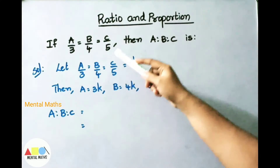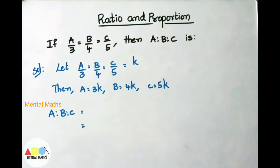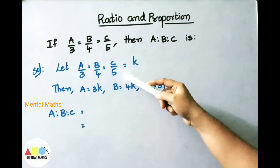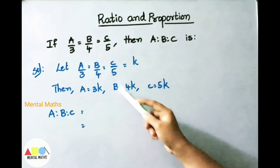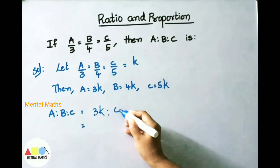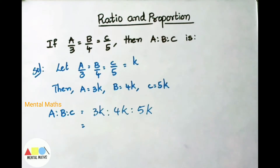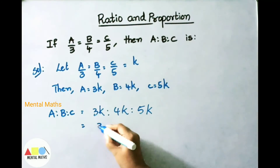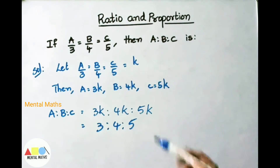If A/3 equals B/4 equals C/5, then A is to B is to C is how much? Let A/3 equals B/4 equals C/5 equals K. Then A equals 3K, B equals 4K, and C equals 5K. So A is to B is to C is 3K is to 4K is to 5K. Dividing all terms by K, we get the ratio 3 is to 4 is to 5. Therefore A is to B is to C is 3 is to 4 is to 5.